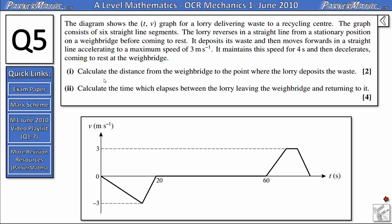In part 1 we need to calculate the distance from the weighbridge to the point where the lorry deposits the waste. So the first thing we need to do is look at the graph and identify the bit that part 1 is talking about.